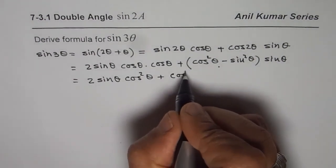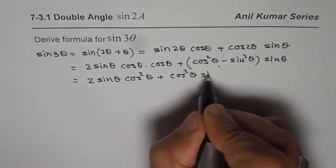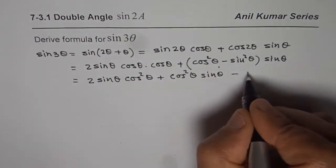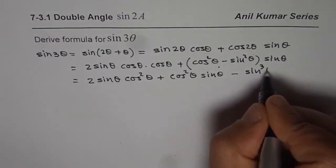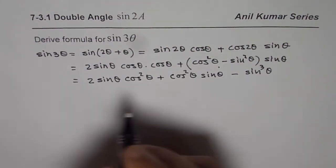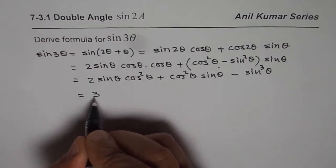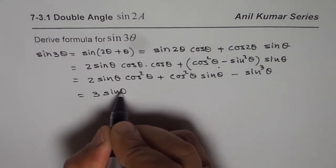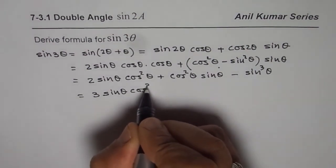So we get cos² θ sin θ minus sin³ θ. Now 2 sin θ cos² θ plus cos² θ sin θ gives you 3 sin θ cos² θ.